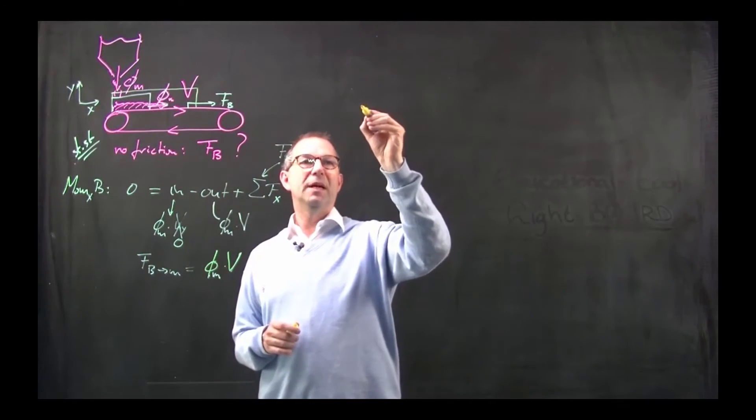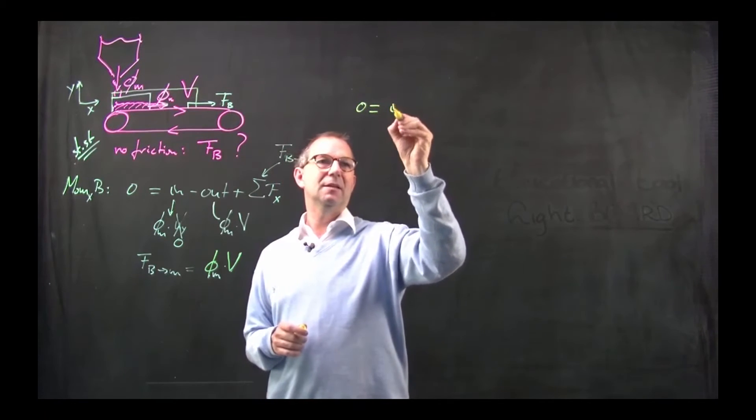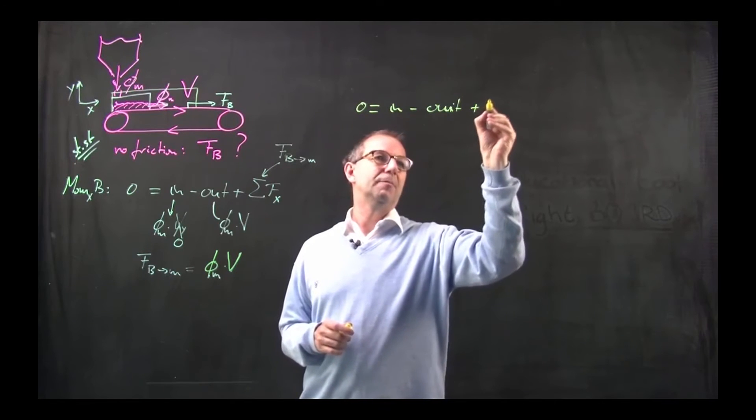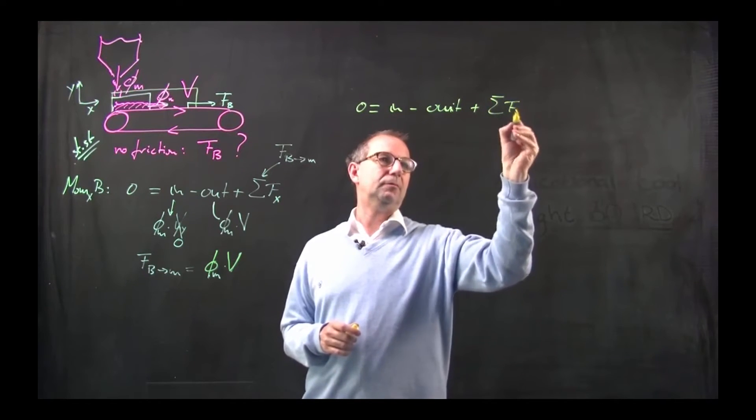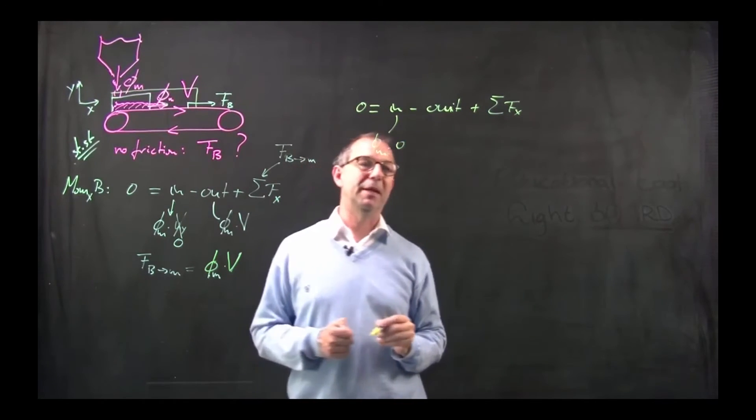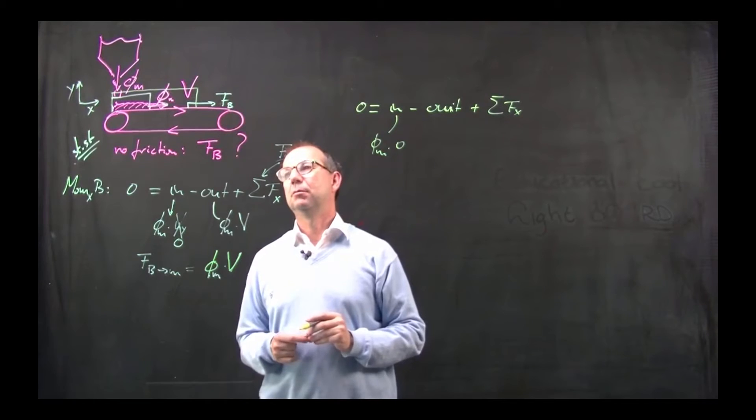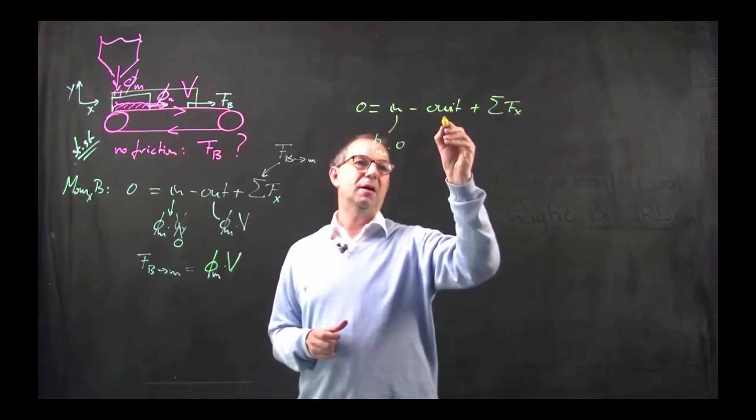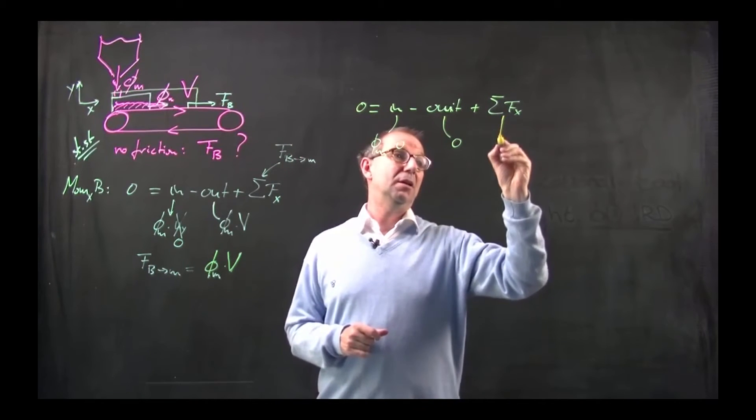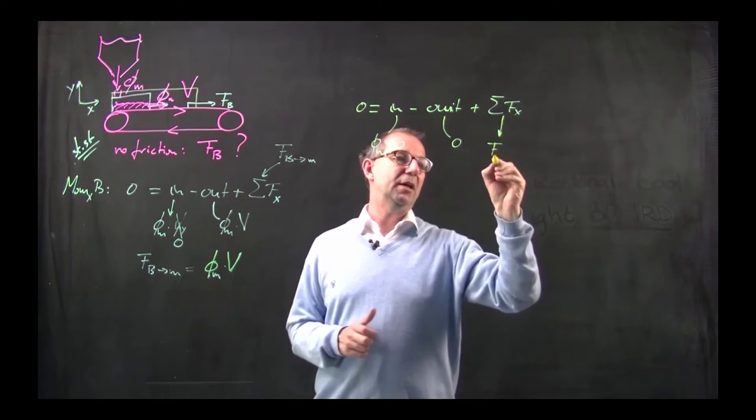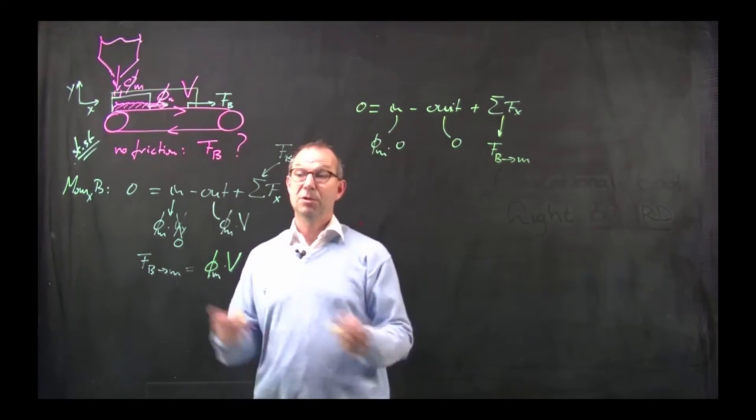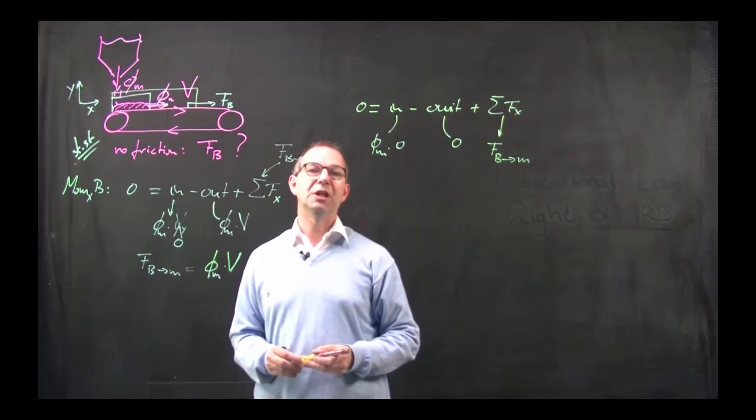Now, I need my momentum balance again. Nothing is coming in. Same arguments. Because it only carries y-momentum. Nothing is coming out. Because literally nothing is coming out. And thus, I would have that belt on the sand mass would be zero. Strange, here I got something different. What did I do wrong?